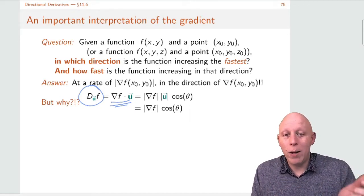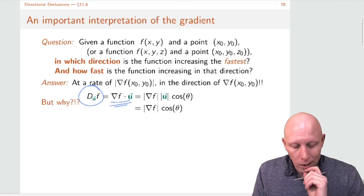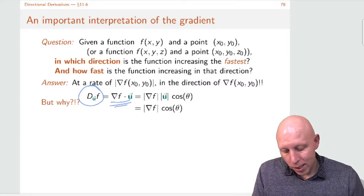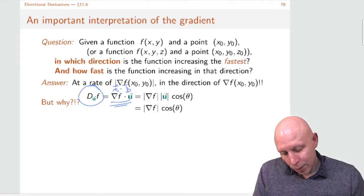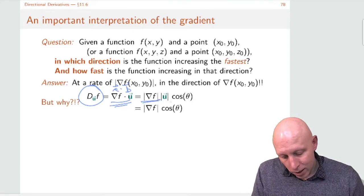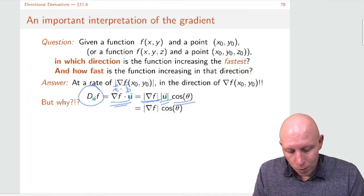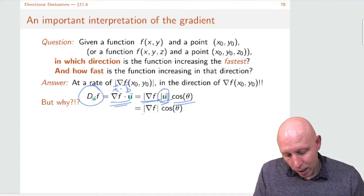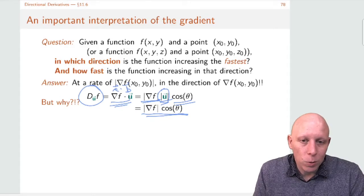Now let's go back to way back at the beginning of the semester where we wrote down the formula for the dot product. The formula for the dot product says the dot product is equal to the length of a times the length of b times the cosine of the angle between them. So we get the length of the gradient vector times the length of the unit vector times cosine of theta. Since this is a unit vector, its length is 1, so what we get is the length of the gradient times the cosine of the angle between the gradient and the vector in which we're going.